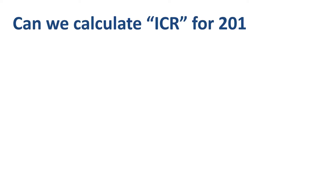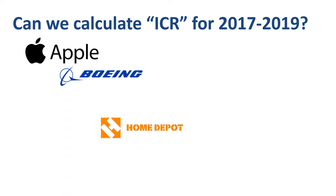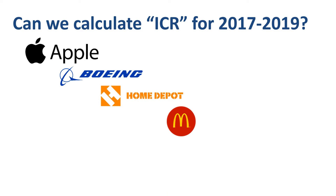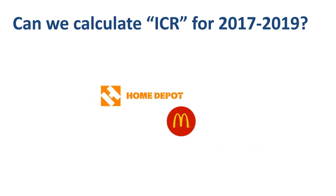Let's calculate the interest coverage ratios for each of three years for the following companies: Apple, Boeing, Home Depot, McDonald's, Tesla, and Verizon. For how many of these companies can you successfully calculate the interest coverage ratio for 2017, 2018, and 2019? The answer is only 2 out of 6.